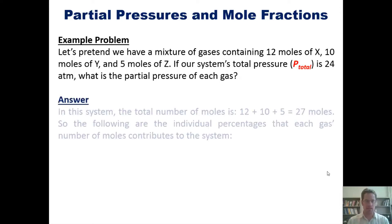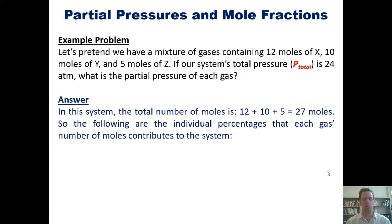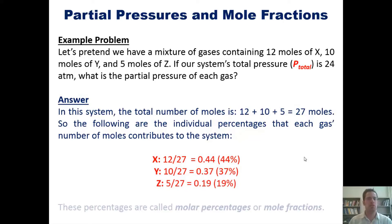In this system, the total number of moles is 12 plus 10 plus 5 equals 27 moles. So the following are the individual percentages that each is of 12 total moles of gas. If I divide that by the total, X is contributing 0.44 or 44% of the total pressure to the system. By analogy, Y is contributing 37% and Z is contributing 19%. These percentages are called molar percentages or mole fractions.